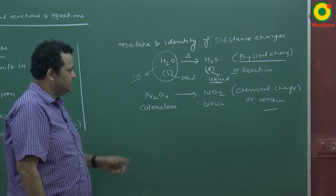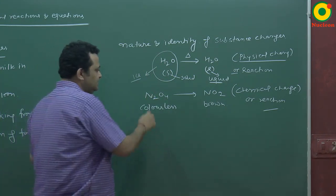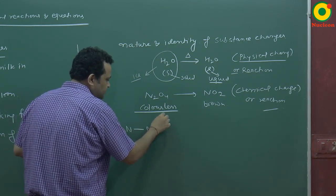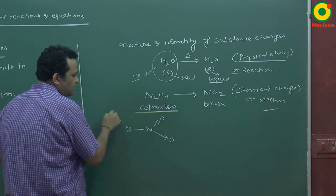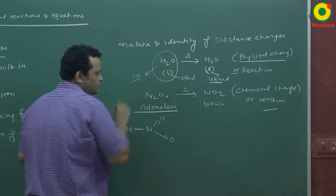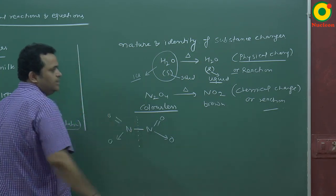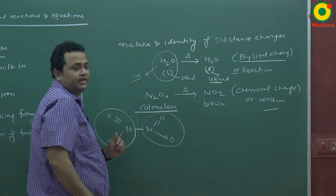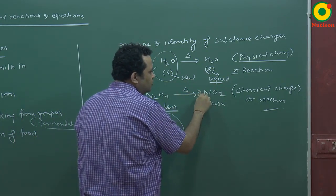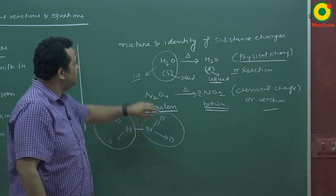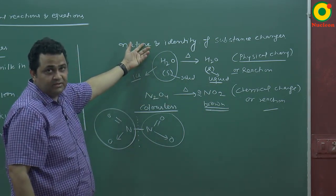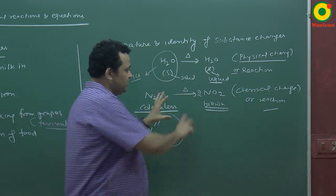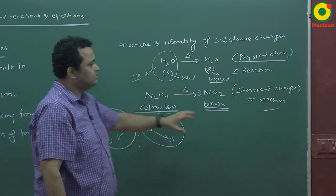Now let's look at an N2O4 molecule. Its color is colorless. When we warm it, the molecule breaks into two parts. If it breaks, this molecule will give NO2 and NO2. When it dissociates into two NO2 molecules, the color becomes brown. During a chemical reaction, the identity changes — colorless becomes brown — because there is bond breaking. So this is a chemical change and reaction.